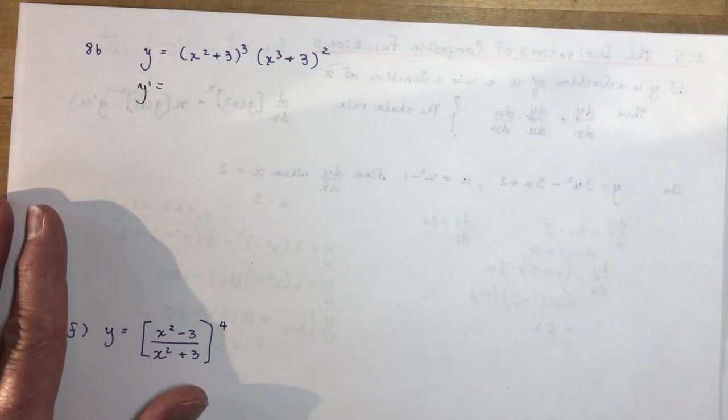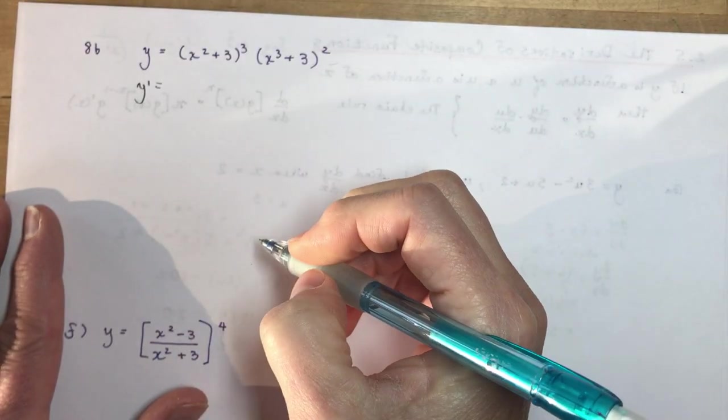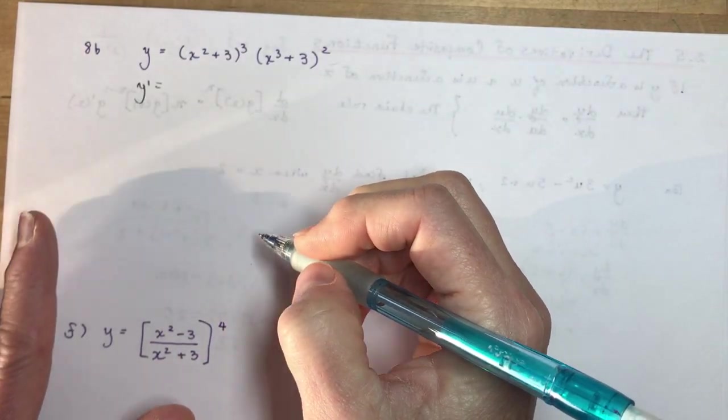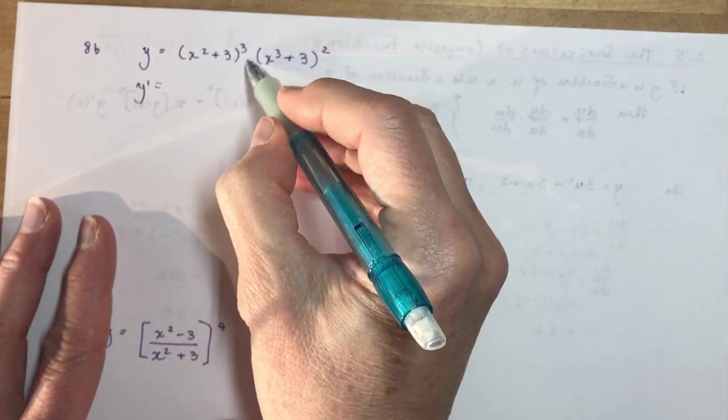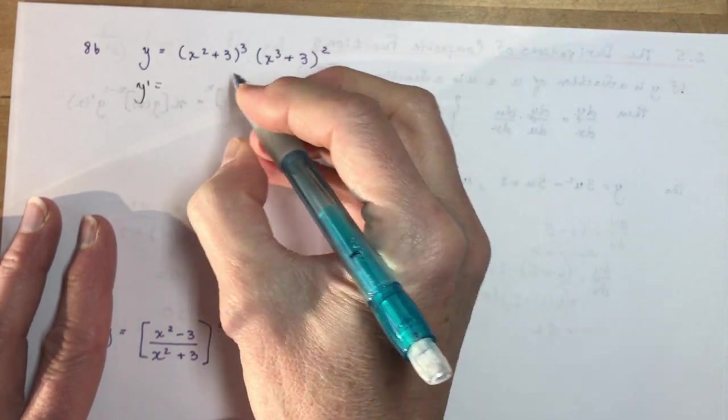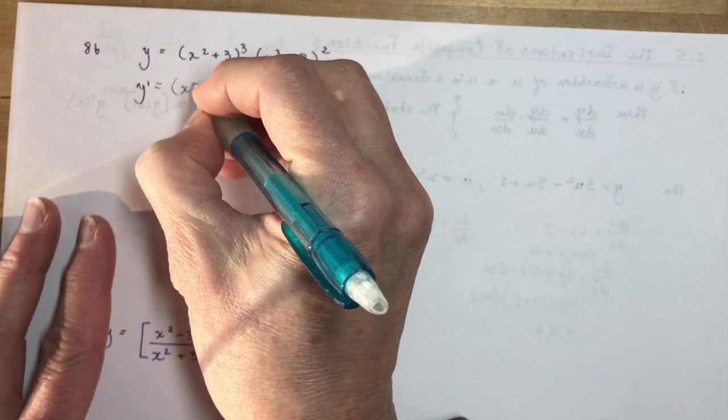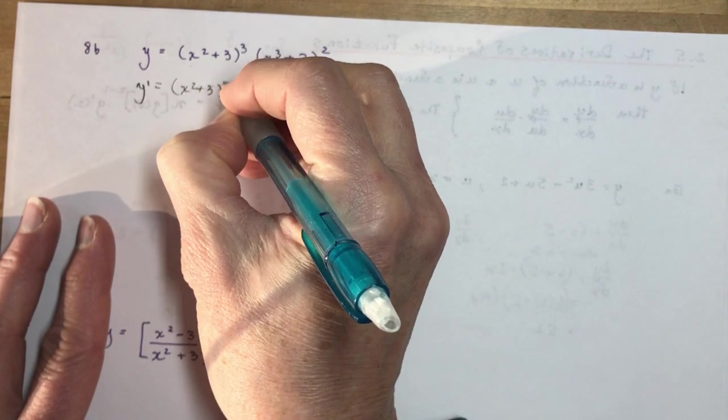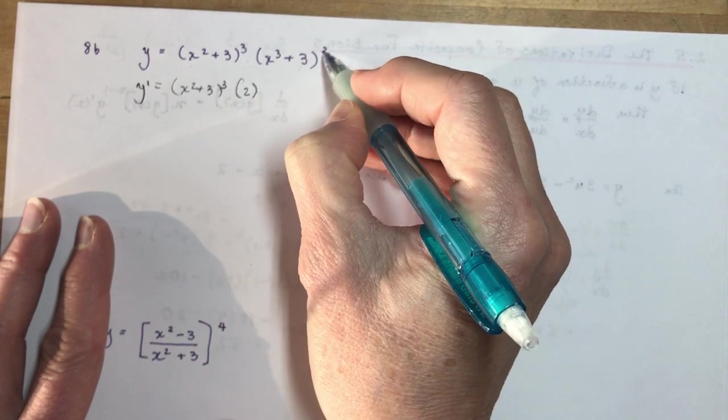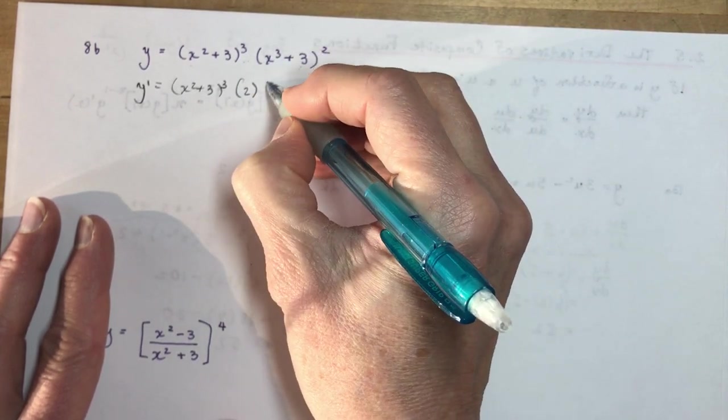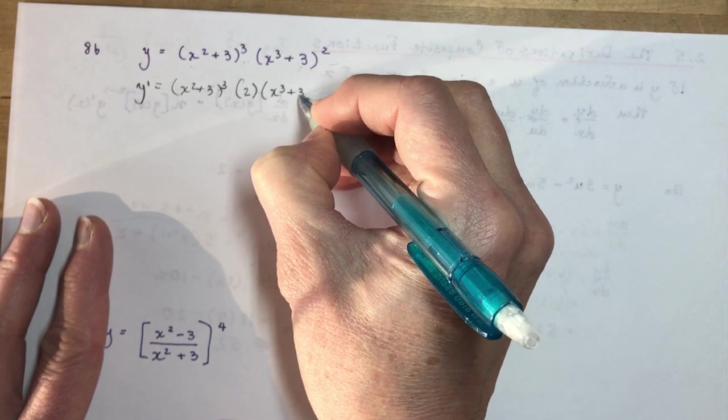You know, you'll turn the back of the book and go, Oh, I don't know how they got this answer. So I'm going to show you how to simplify these more difficult questions. Okay, so this is a product, right? I have something times something. So I'm going to do the first times the derivative of the second. So that's going to be, make brackets, okay? So you know that you've multiplied. So it's 2 times (x³ + 3).